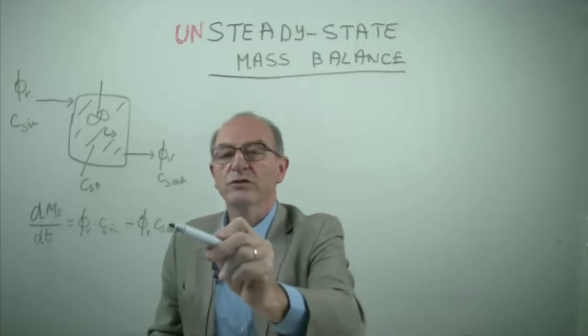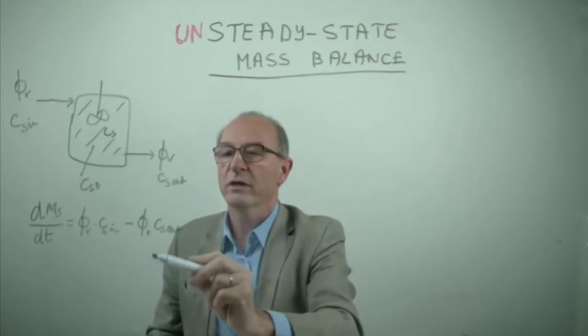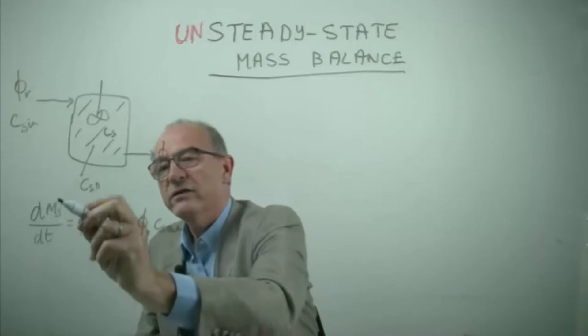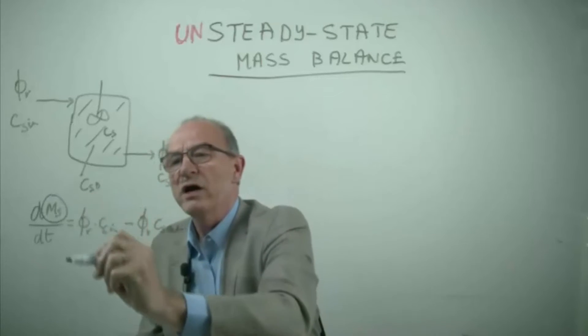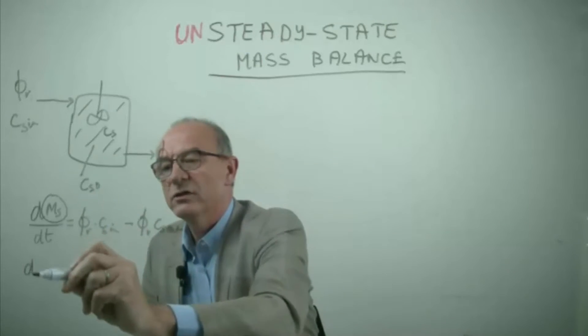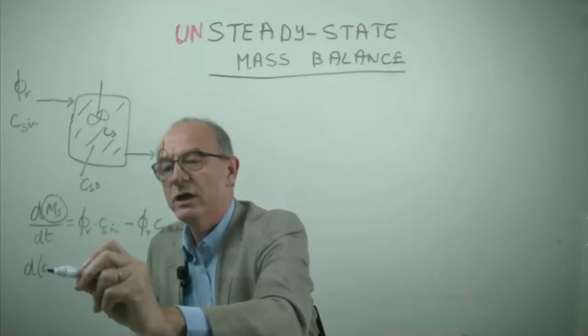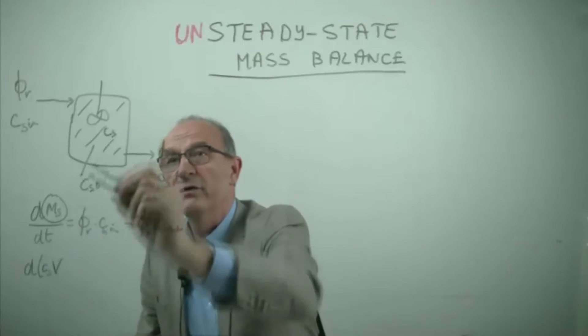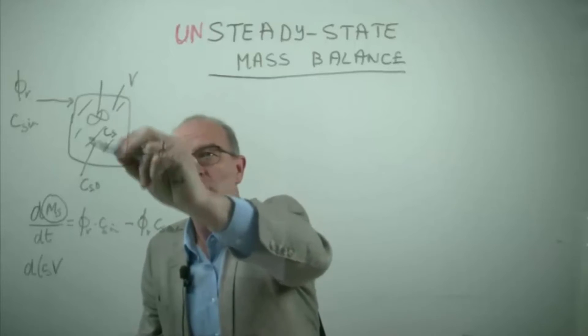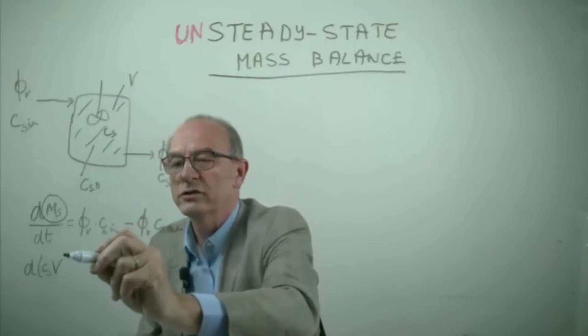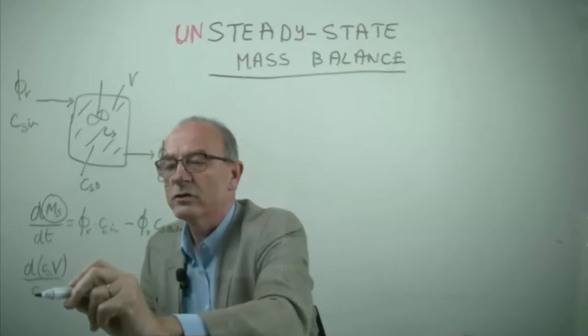We have seen that the concentration in the vessel and in the outlet are similar. So what is the mass which is here? This term is the concentration in the vessel multiplied by the volume of the vessel, and that is the volume in which the salt is dissolved as a function of time.